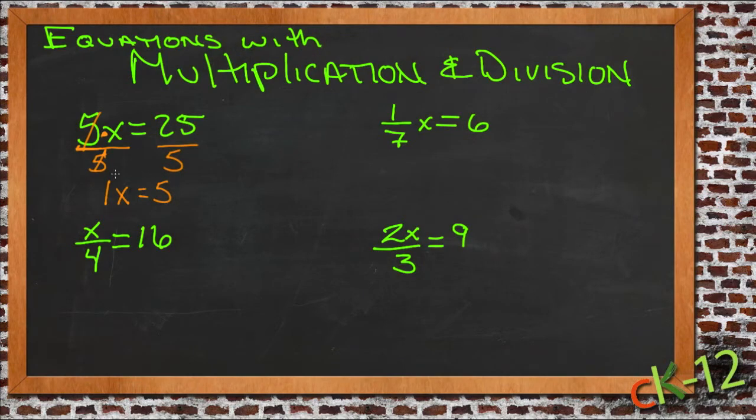So our answer, in just one single step, is to divide both sides by 5 and we get x equals 5. Now we can verify that's correct because if we put 5 in place of x in the original problem, we'd have 5 times 5, which is 25. That is correct, so we know that x equals 5 is a viable answer.